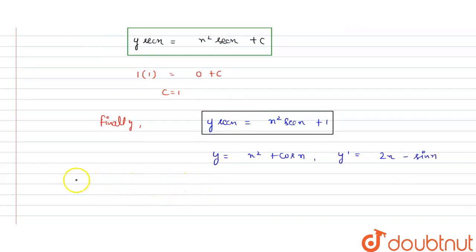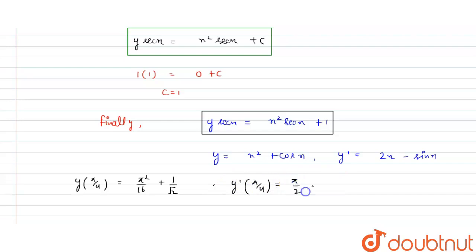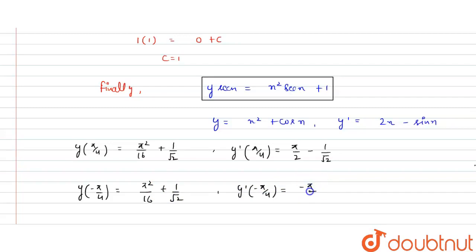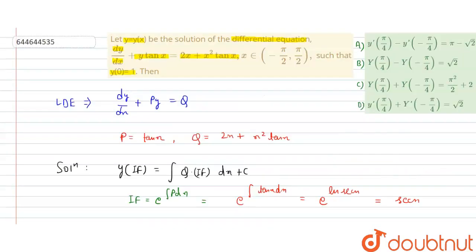Computing the values: y(π/4) = (π/4)² + cos(π/4) = π²/16 + 1/√2. And y'(π/4) = 2·(π/4) − sin(π/4) = π/2 − 1/√2. For y(−π/4): since cos(−θ) = cos(θ), y(−π/4) = π²/16 + 1/√2, same as y(π/4). For y'(−π/4) = −π/2 + 1/√2, since sin(−θ) = −sin(θ).